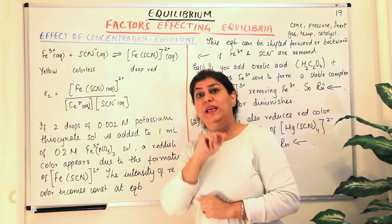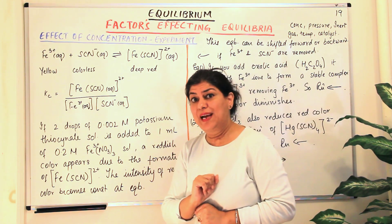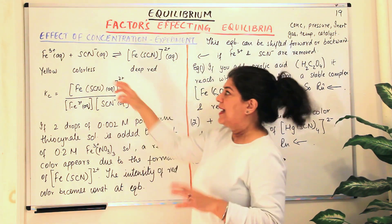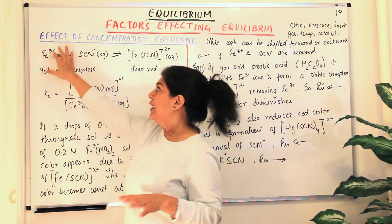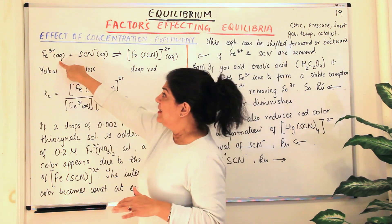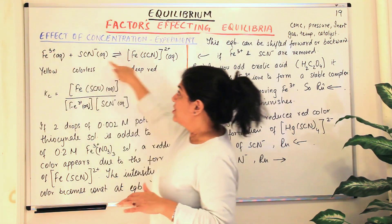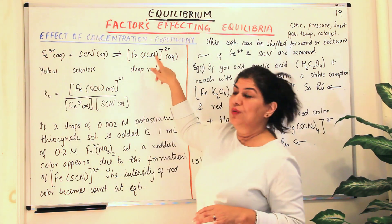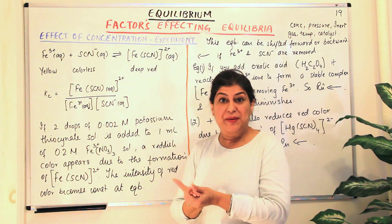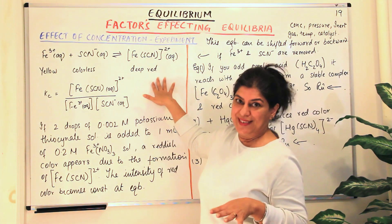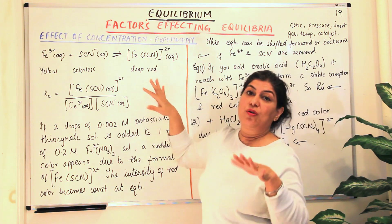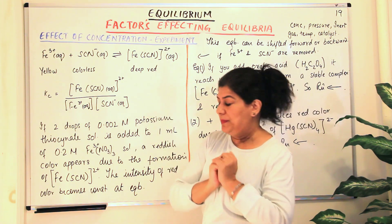A new equilibrium will be established. For example, if I add more ferric ions by adding more ferric nitrate, the reaction will proceed in the forward direction and therefore the red colour will become deeper. A new equilibrium will be established, and this time the red colour of this new equilibrium will be deeper.